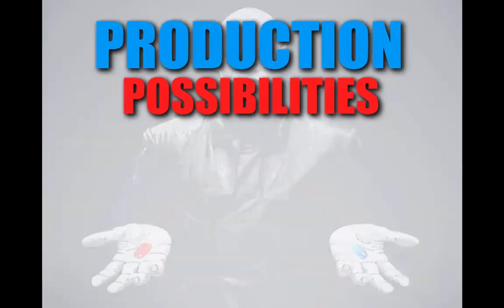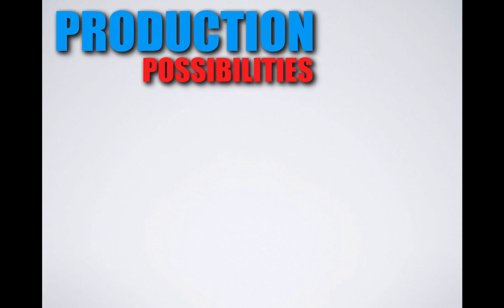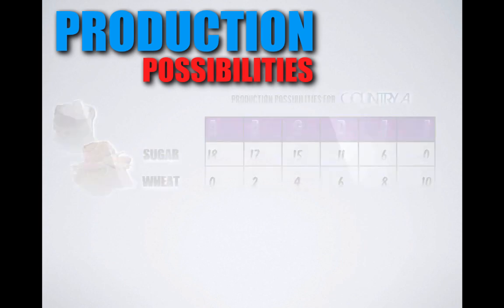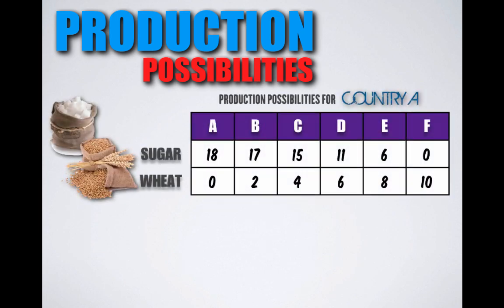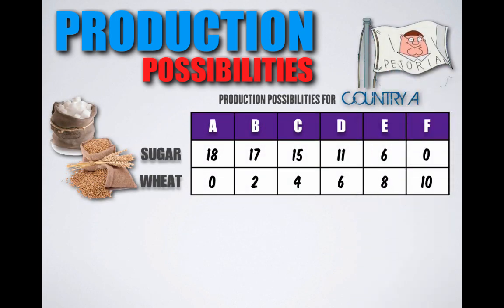The function provided gives us the production possibilities for country A. Let's go ahead and call country A, Petoria.